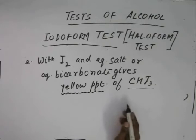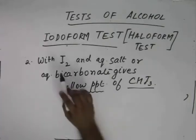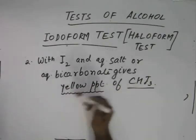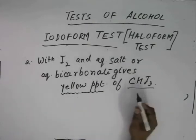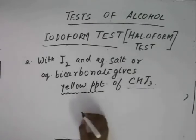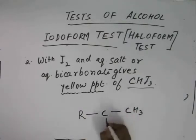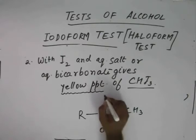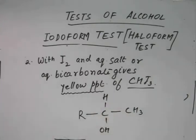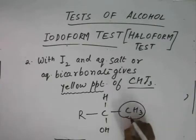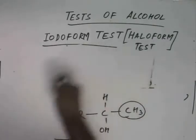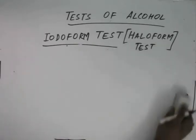So if any alcohol reacts with iodine in the presence of aqueous salts or bicarbonates and gives a yellow precipitate, we know that the alcohol has a terminal CH3 group attached to it.